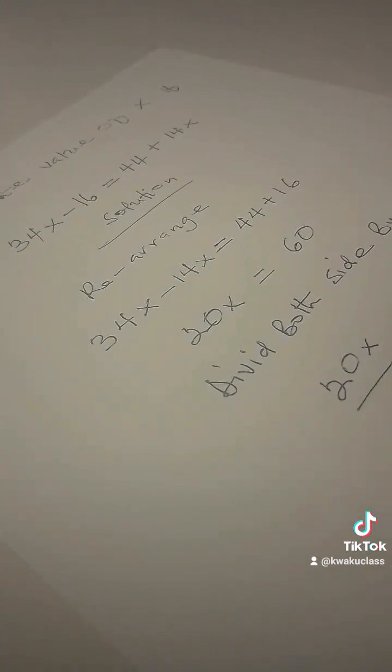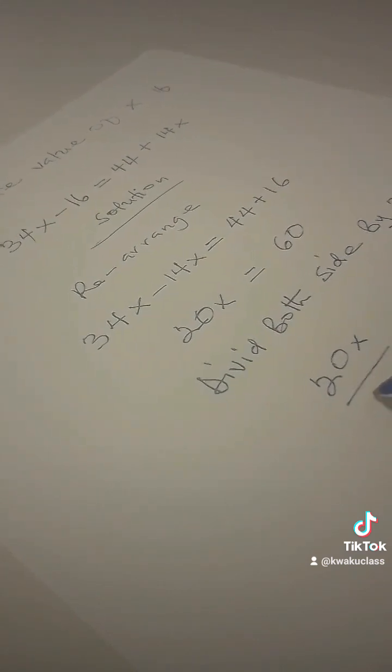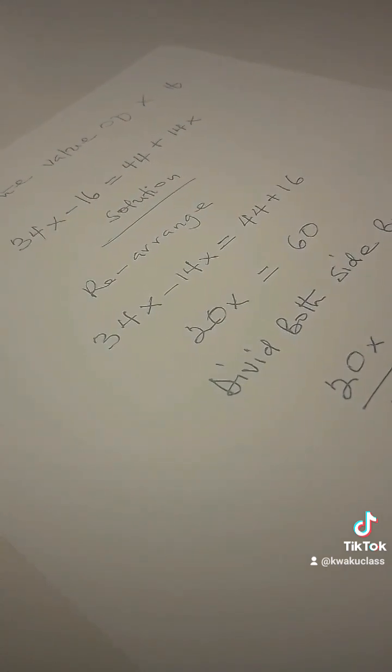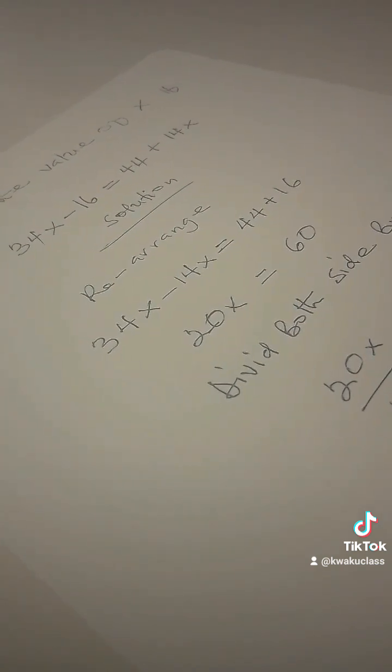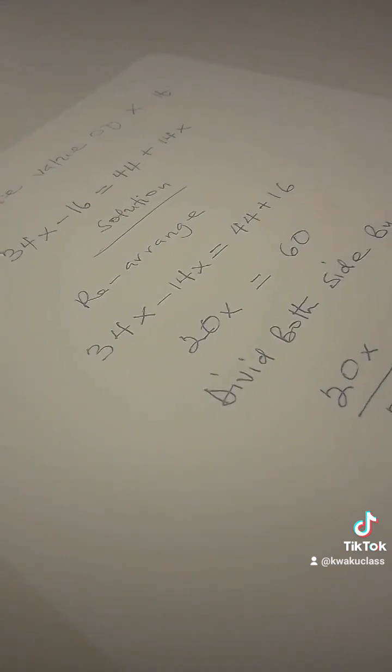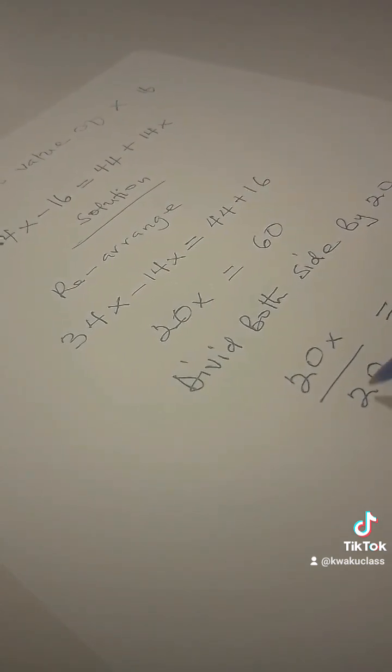Now let's look at it. So 20x divided by 20, yes 20, equal to 60 divided by 20.